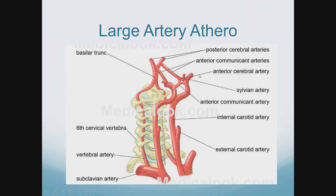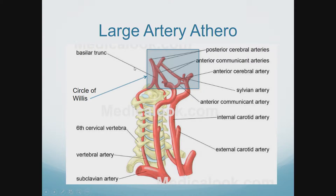The circle of Willis itself is generally variant. It's very uncommon to see a textbook circle of Willis in which all branches are present. Most patients will have either missing PCOMs or sometimes what we call fetal origin of a posterior cerebral artery, meaning the posterior cerebral artery comes directly from the carotids. All these variants are common — not necessarily pathological — but they help us understand why certain strokes occur in certain locations.